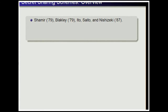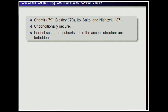The first secret sharing schemes were presented by Shamir and Blakley, and later Ito, Saito, and Nishizeki presented a way to construct secret sharing schemes for every access structure. The schemes we consider are unconditionally secure and perfect, meaning that subsets not in the access structure cannot obtain any information about the secret.